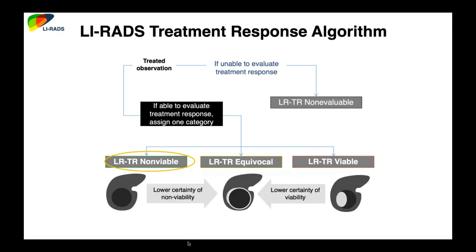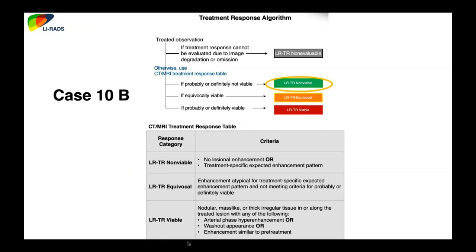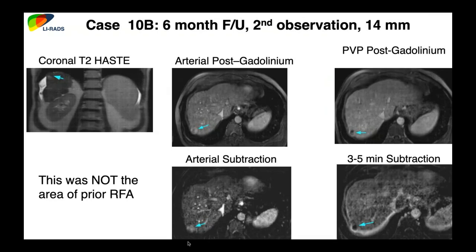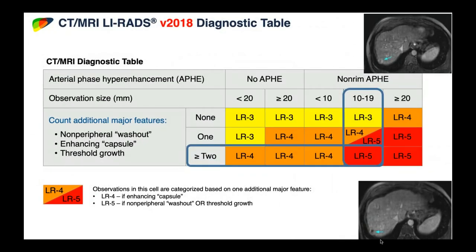However, don't fall into satisfaction of search error. Looking through the rest of the images, a few cuts below the RFA site and separate from it, there is a second observation with arterial enhancement, washout, and possibly a capsule — greater than 10 millimeters. For a new observation separate from the treated area, we do not apply the treatment response algorithm — we go back to the original LIRADS characterization algorithm. With arterial enhancement, washout, capsule, and size 10-19mm, this is LR5.